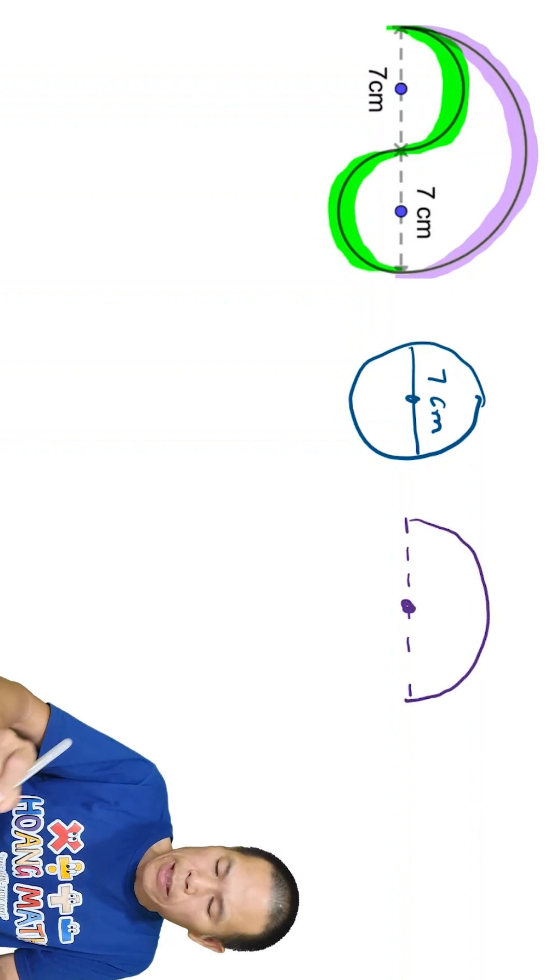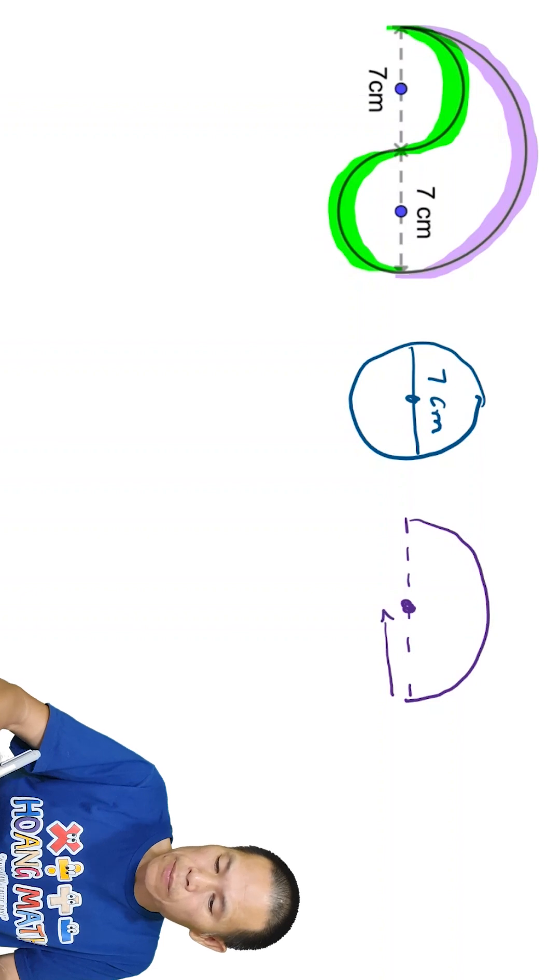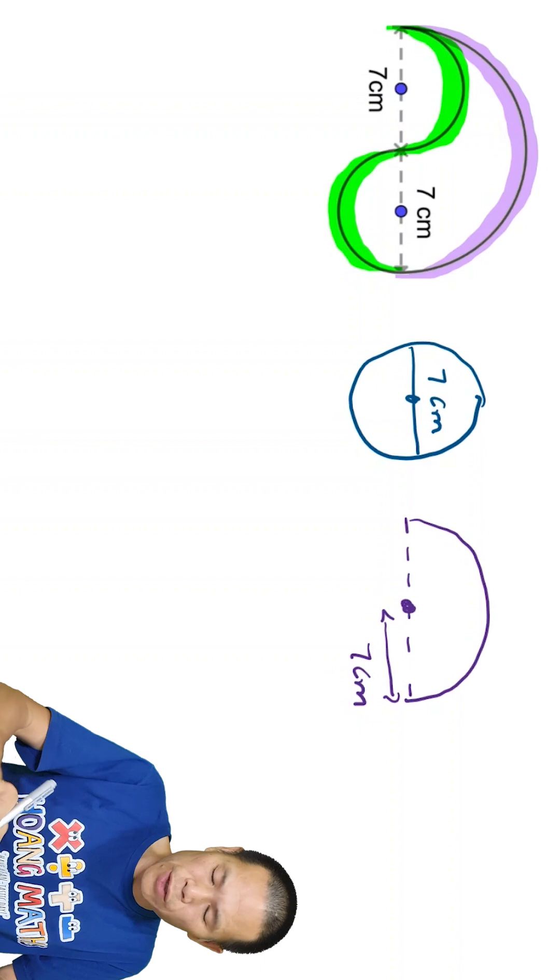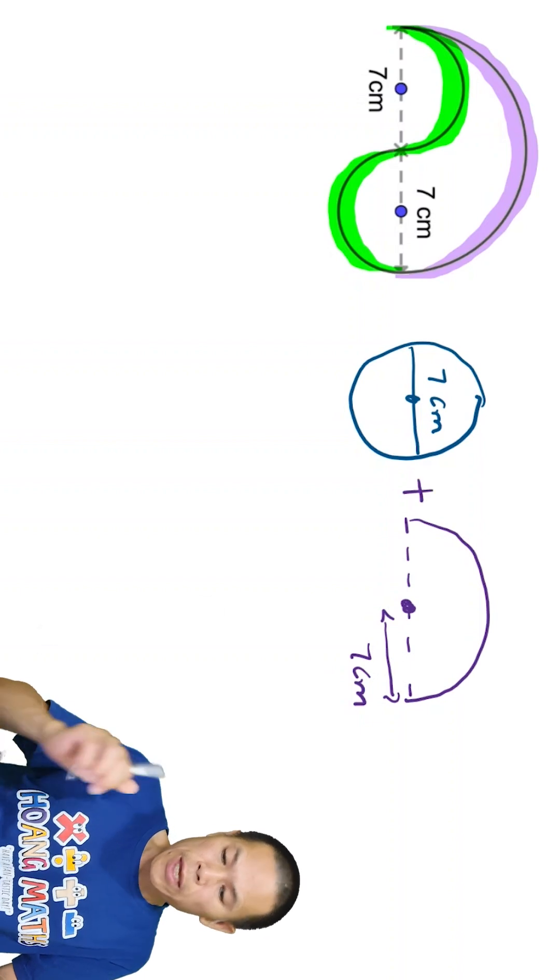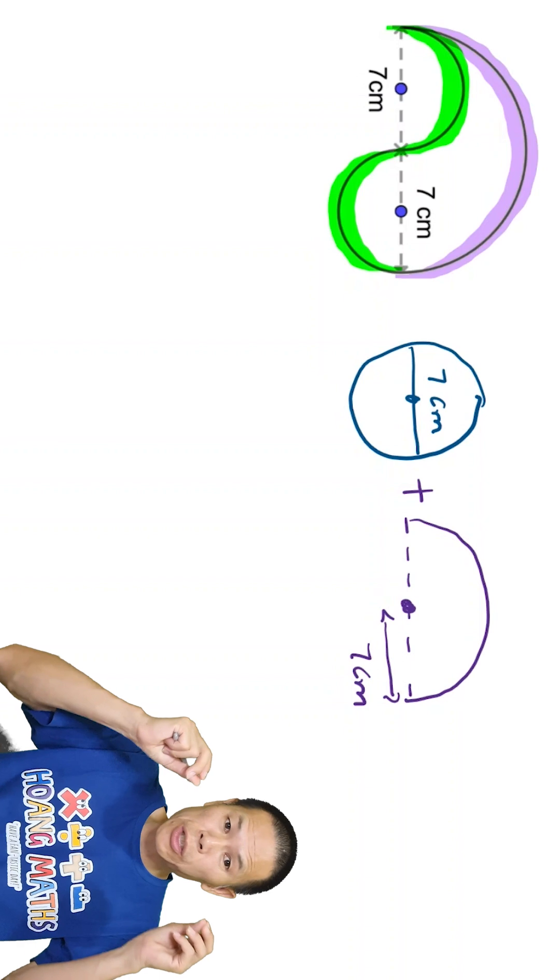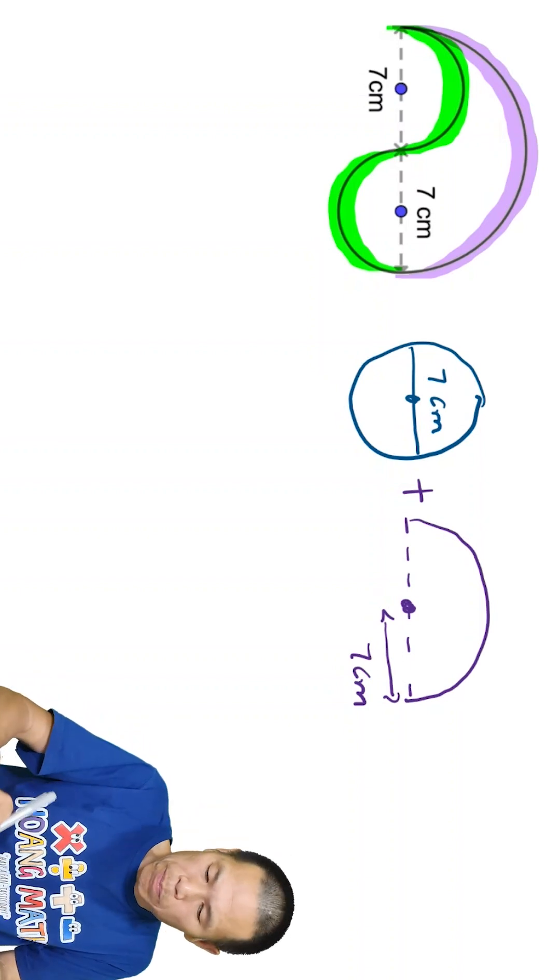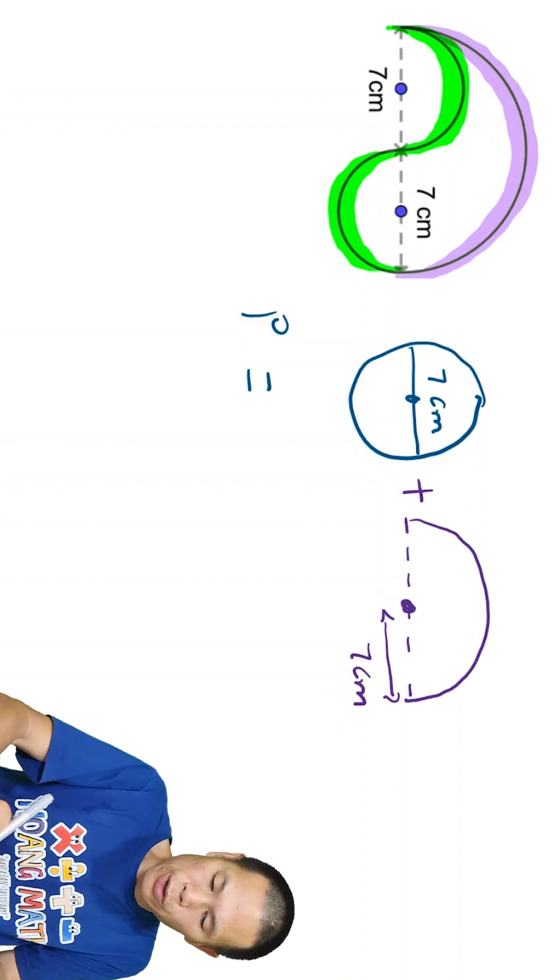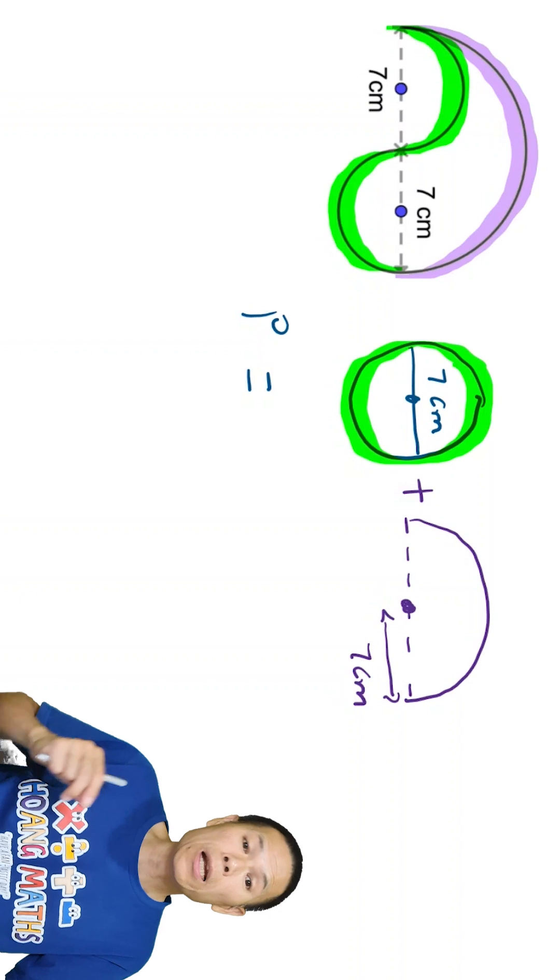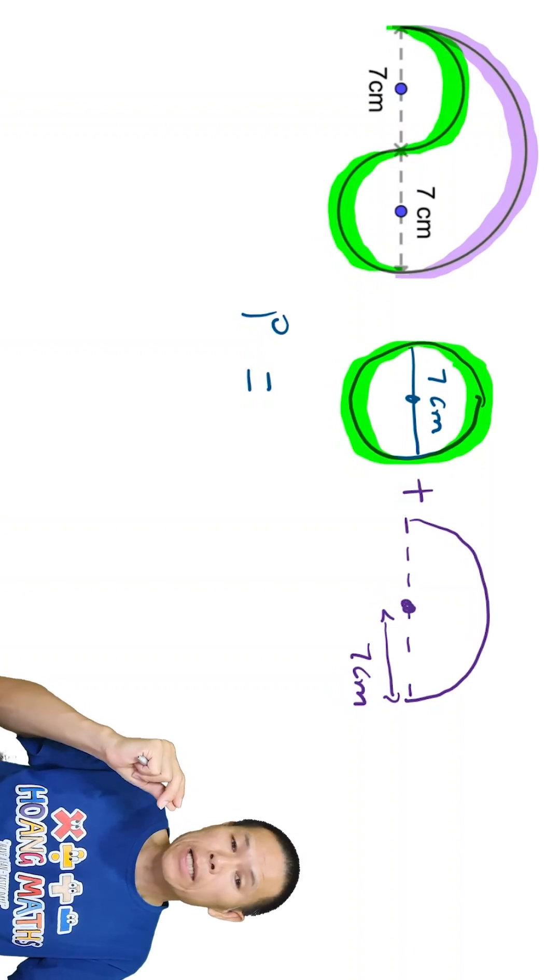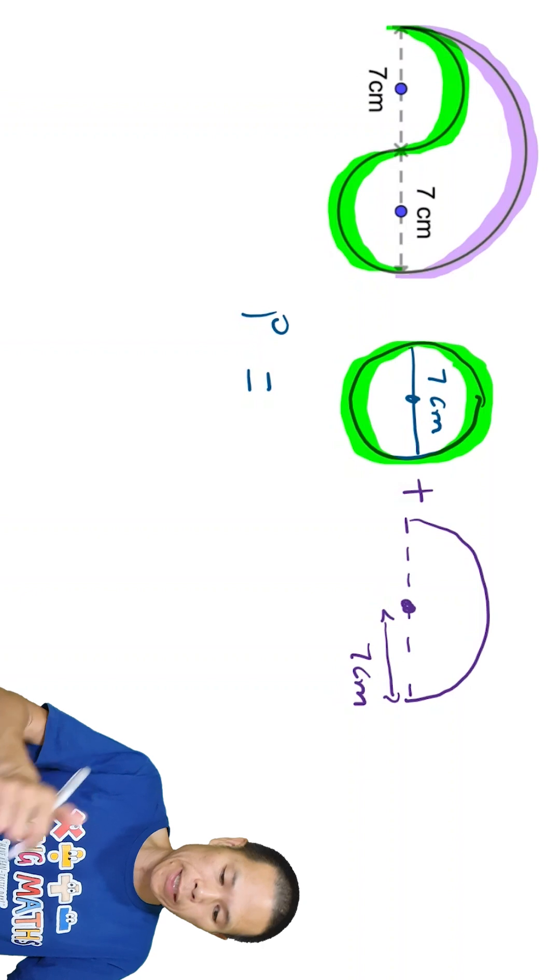And then the radius for this is 7 centimeters. So now we just need to find the circumference of the small circle and the circumference of half of the larger circle and we just add them together. So that means the perimeter P equals, so this circumference of circle here is 2πr or πd, because we already have the diameter. So use πd is easier, that's all.